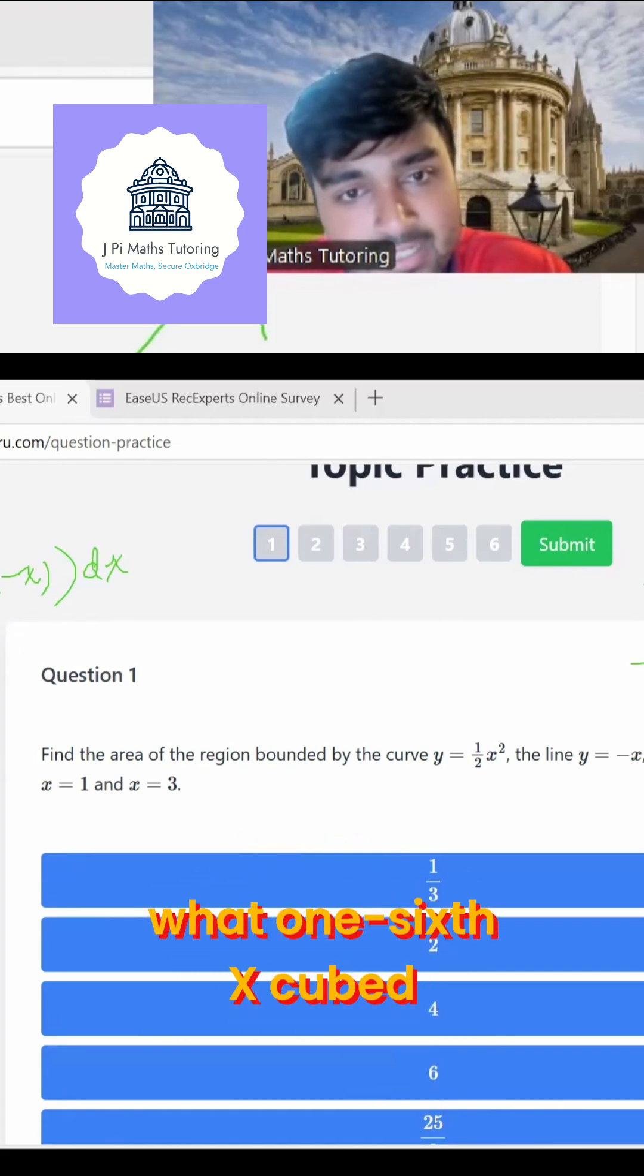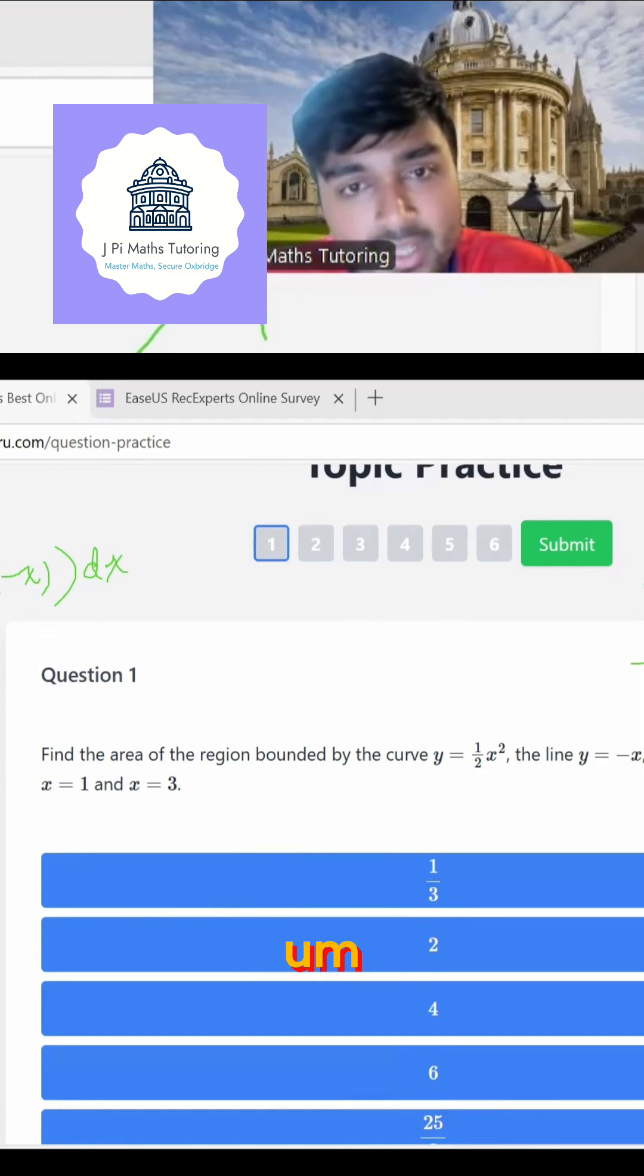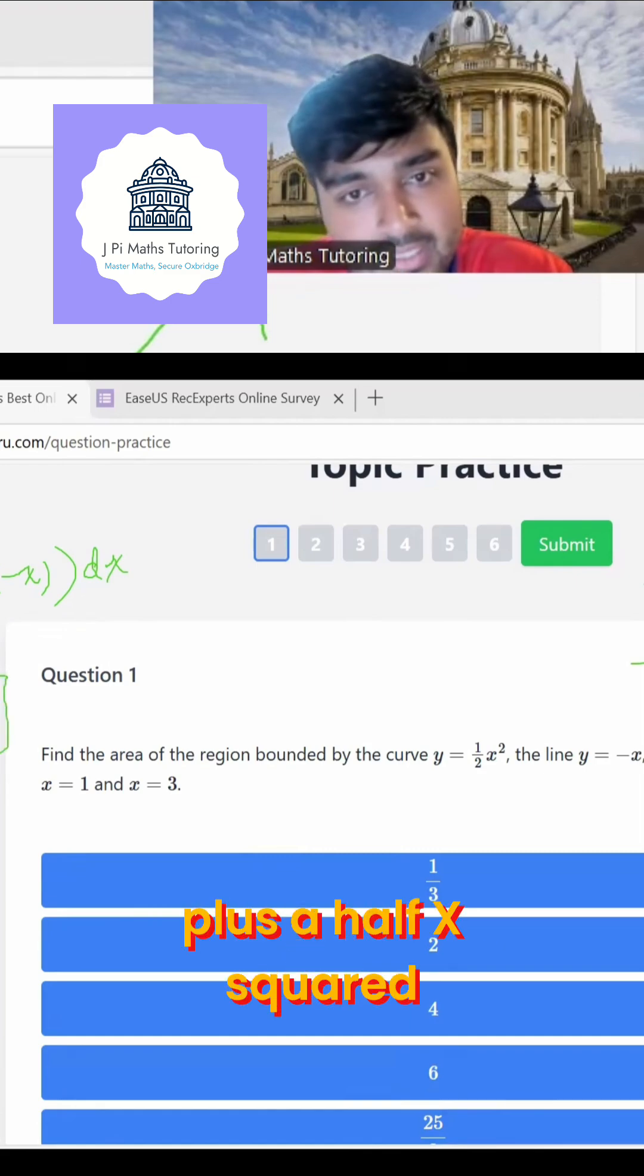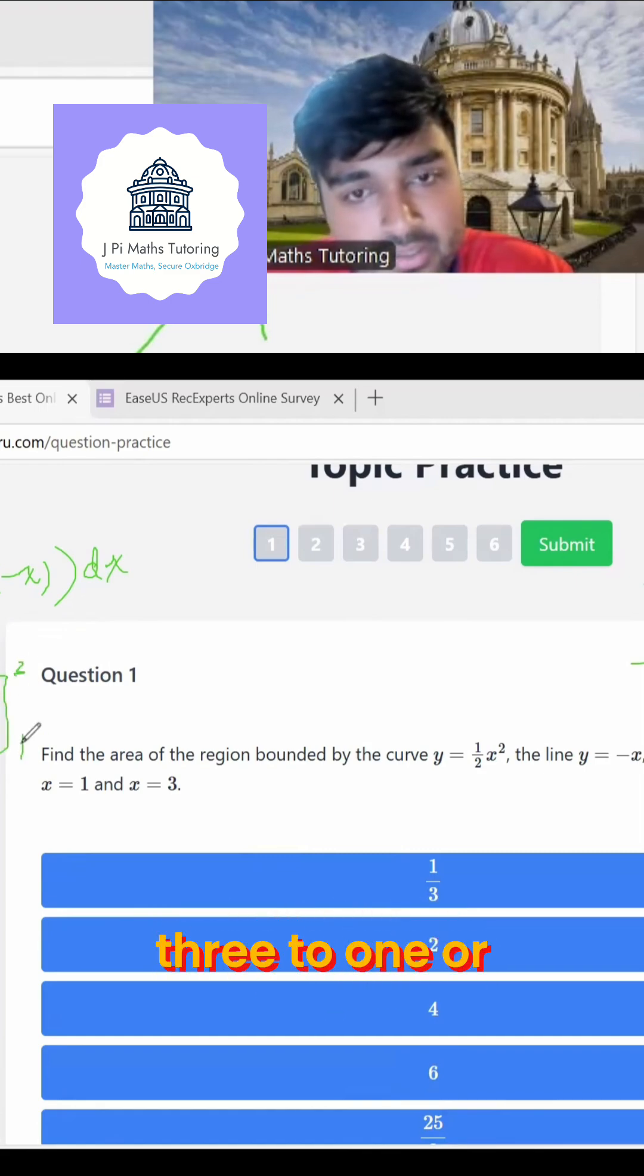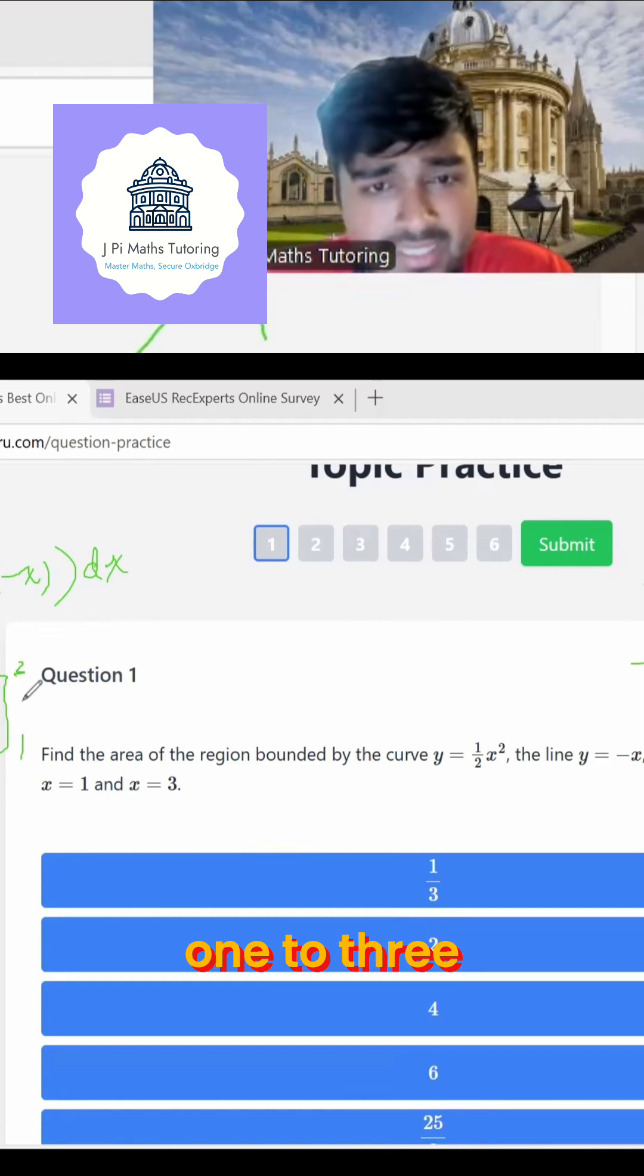So this will be what? One sixth x cubed plus a half x squared. And that's from three to one or one to three.